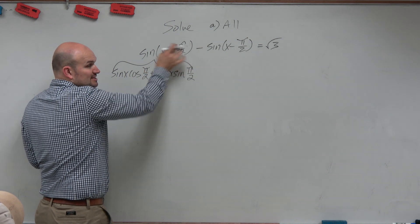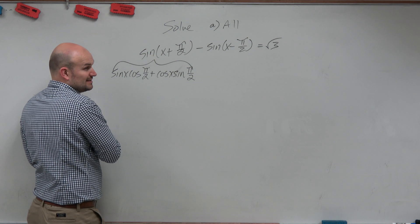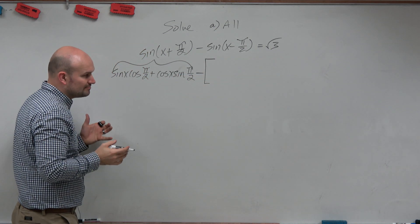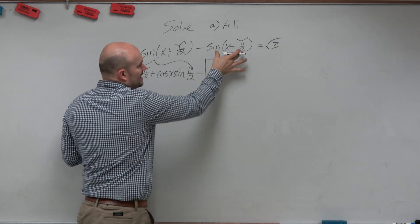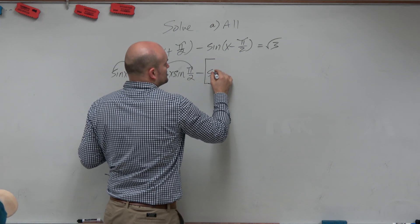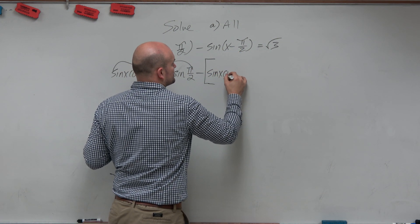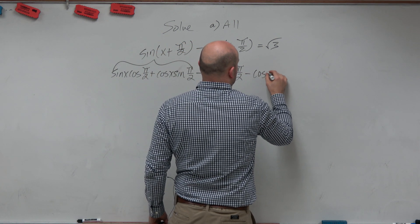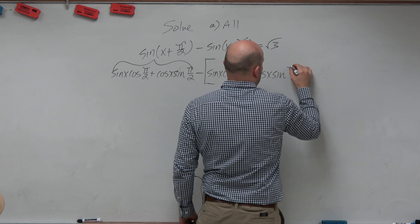Now here, notice the subtraction. Remember I talked about this - this is where people make mistakes. So use a bracket, my recommendation. Now let's do this one. So this is sine of x times cosine of π/2 minus cosine of x sine of π/2.